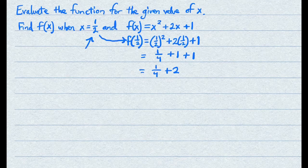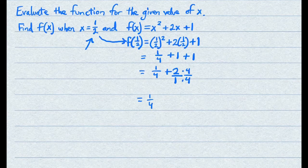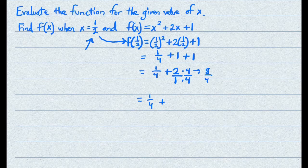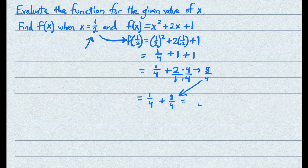Now you just need to get common denominators. The denominator here is 4, so you have 2 over 1 — multiply the denominator by 4 and the numerator by 4 as well. 2 times 4 is 8 and 1 times 4 is 4. So you have 1 over 4 plus 8 over 4. Now that they have the same denominator, 1 plus 8 is 9 over 4... and that's your answer — 9 over 4.